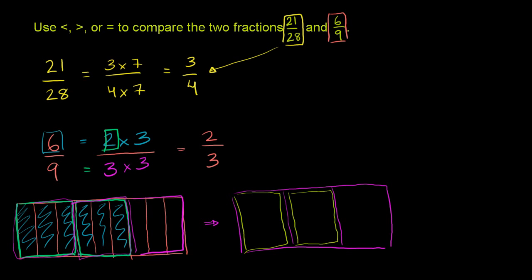So 6/9 is the same thing as 2 over 3. 2 of the thirds, of the 1 thirds. That's what 6/9 is equivalent to. Now, let's think about what's larger.